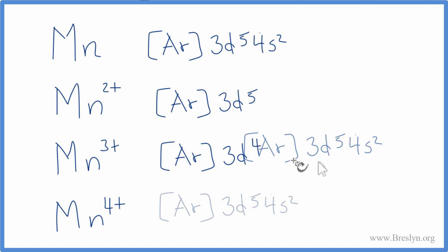For Mn4+, we lose the 2 here in the s orbital. And instead of 5, we lose two more. We now have 3, 3d3. So these are the electron configurations for neutral manganese and then the different ions, the Mn2+, 3+, and 4+.